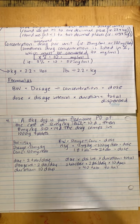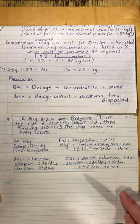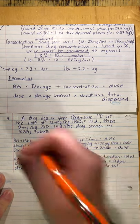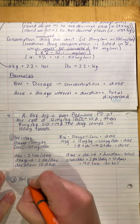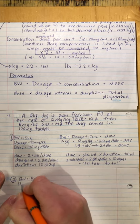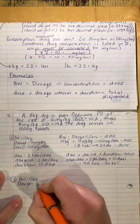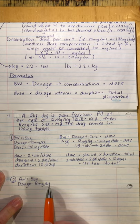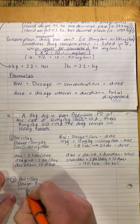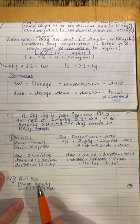Now we do phase two. Body weight is still 15 kilograms. The dosage has changed: for phase two, it's 8 milligrams per kilogram. Checking units — both in kilos, we're good. Concentration is still the same — 100 milligrams per tablet. Body weight and concentration haven't changed, just the dosage.